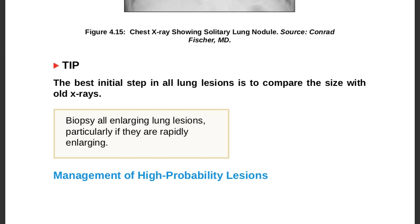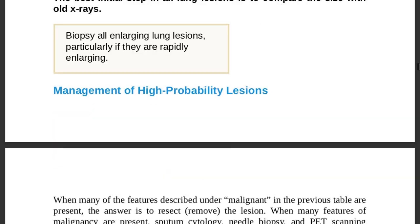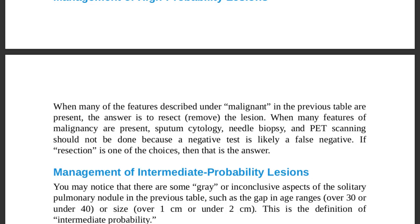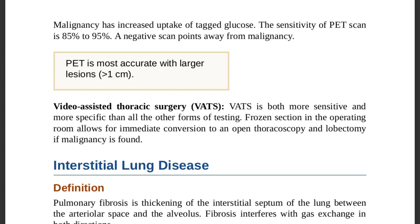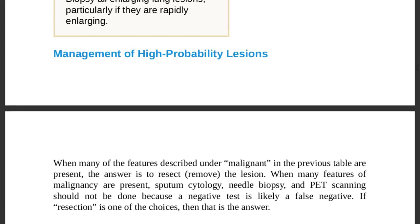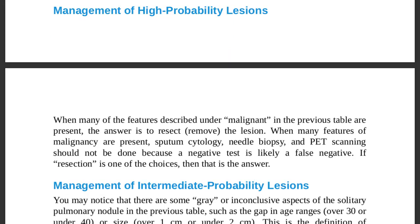For high probability lesions, when many malignant features from the previous table are present, the answer is to resect — remove the lesion. If sputum cytology, needle biopsy, and PET scanning are among the choices, do not choose them because a negative test is likely a false negative. If resection is one of the choices, that is the answer.